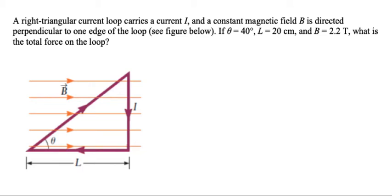A right triangular current loop carries a current I and there's a constant magnetic field B directed perpendicular to one edge of this loop. We're given some dimensions of the triangular loop and asked to find the total force on this loop.